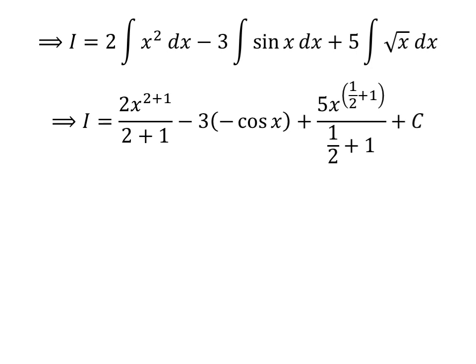Antiderivative of square of x is x raised to the power of 2 plus 1 upon 2 plus 1. Antiderivative of sine of x is minus cosine of x and antiderivative of square root of x is x raised to the power of half plus 1 upon half plus 1.